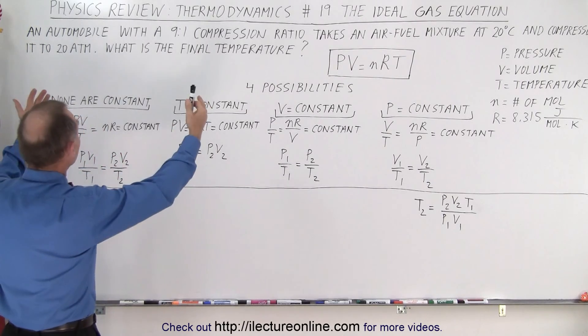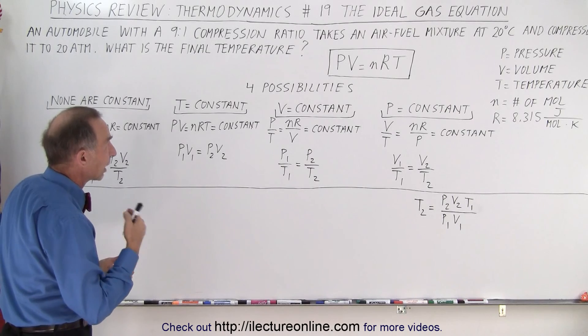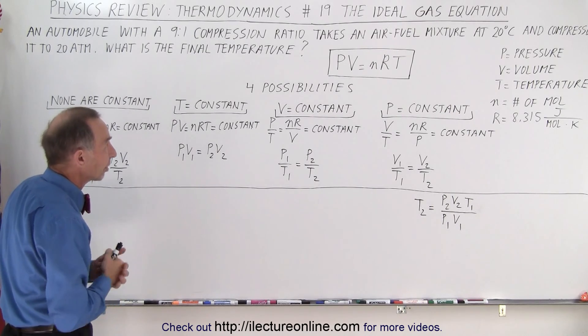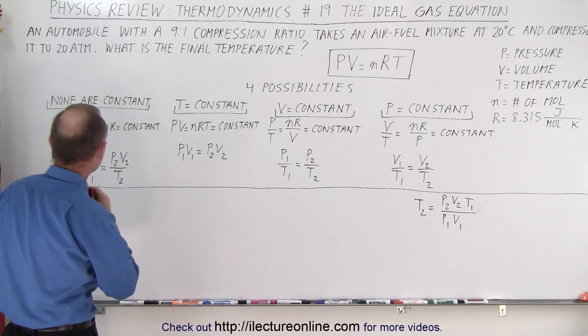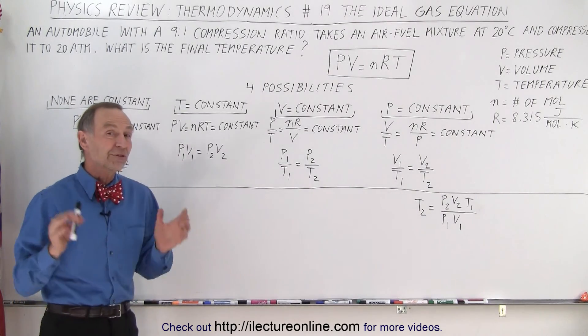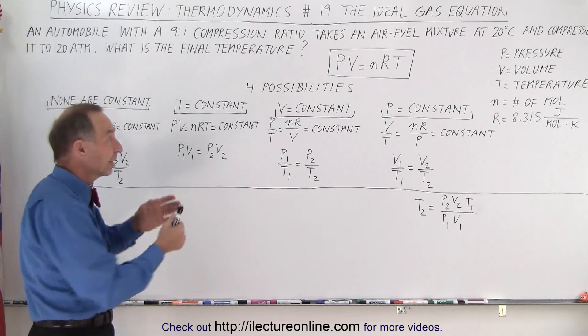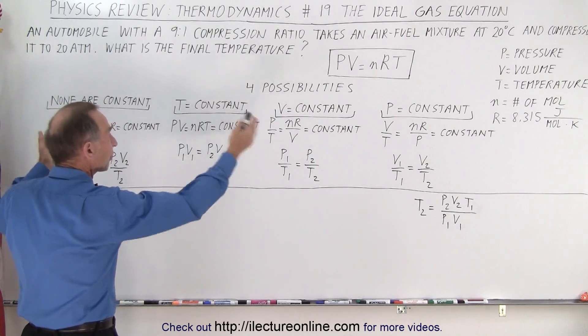So now if we face a problem like this: an automobile with a 9 to 1 compression ratio takes an air-fuel mixture at 20 degrees Celsius and compresses it to 20 atm, what is the final temperature? All we have to do is figure out which things are kept constant, which things are not kept constant, and then choose one of the four forms of the equation.